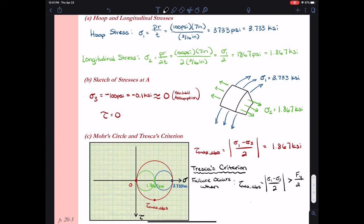So now I need to compare this 1.867 ksi value to the yield stress divided by 2. I go back up to my problem statement. I see my yield stress was given as 50 ksi. Divide that by 2.